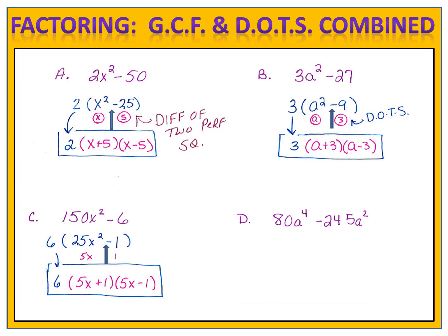Sometimes in our binomials, we might have a variable in common that needs to be factored out. That's the case in exercise D. 80a to the 4th minus 245a to the 2nd. Notice that not only is there a numerical common factor, but there's also the variable a squared that can be factored out. We begin by factoring out 5a squared. When we factor out 5a squared and divide both of the terms, we're left with 16a squared minus 49 in the parenthesis.